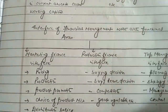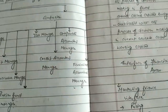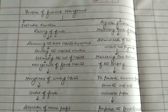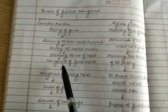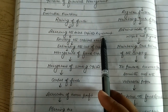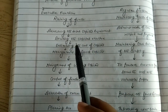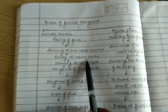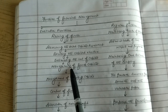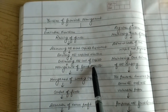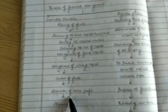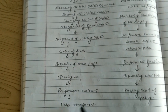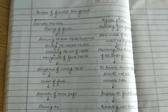Now our last topic is the functions of financial management. The functions are divided into two groups: executive functions and regular functions. Under executive functions: raising of funds, assessing total capital requirement, deciding the capital structure, estimating the cost of capital, management of fixed capital and working capital, control of funds, allocation of excess profit, planning tax, performance evaluation, and helping management.